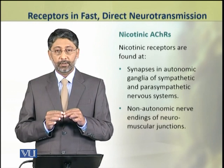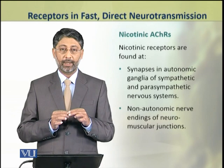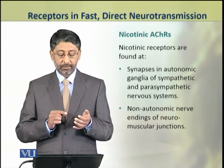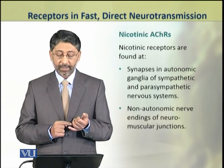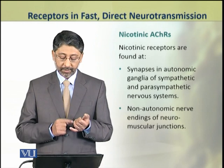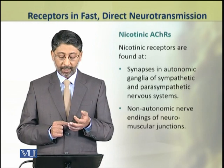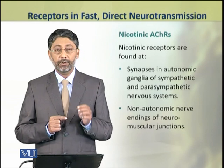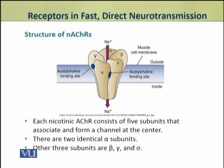Nicotinic receptors are present at two types of synapses: firstly at the synapses of the parasympathetic nervous system, and secondly they are present at the non-autonomic nerve endings of neuromuscular junctions. Now we shall discuss the structure of nicotinic acetylcholine receptors. Each nicotinic acetylcholine receptor consists of five subunits which associate and form a channel at the center.